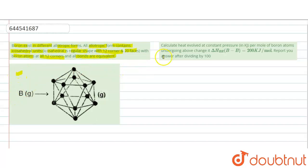We have been given the structure of boron, and we have to calculate heat evolved at constant pressure in kilojoule per mole of boron atom undergoing above changes. Delta H per B-B bond is 200 kilojoule per mole. Report your answer after dividing by 100.